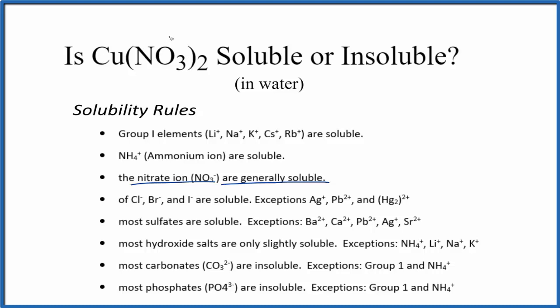The nitrate ion is 1 minus. Since we have two of them, that's why the copper is 2+ — that's why we call this copper-2 nitrate.